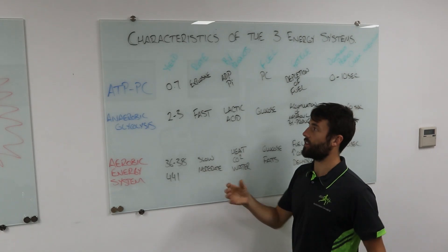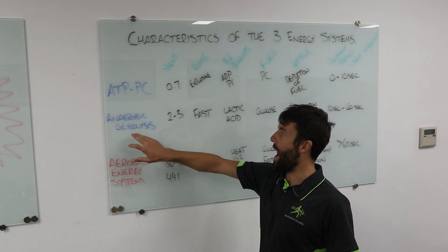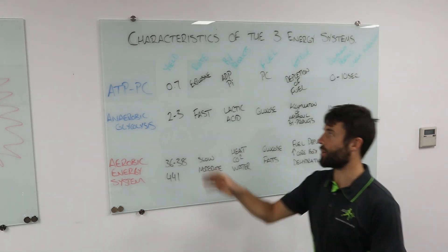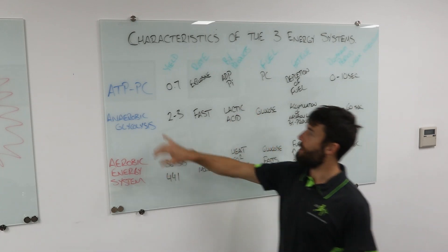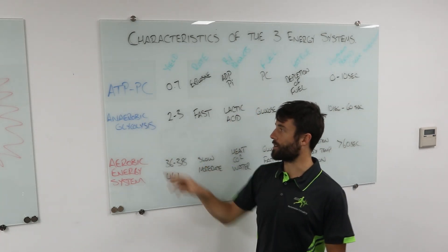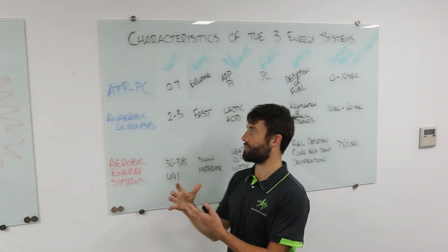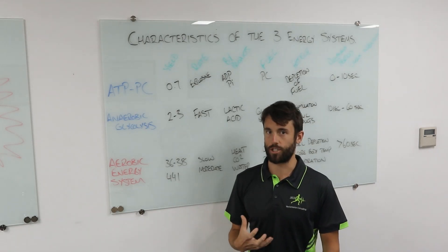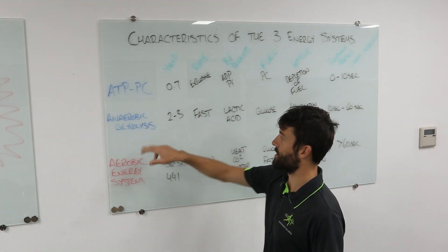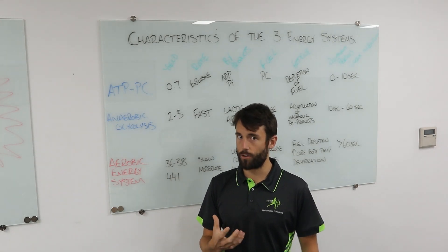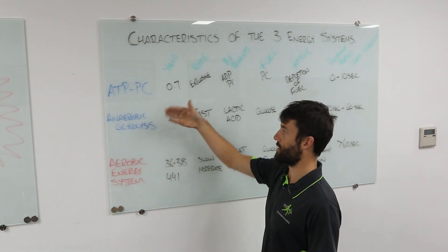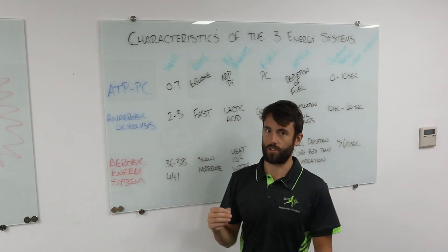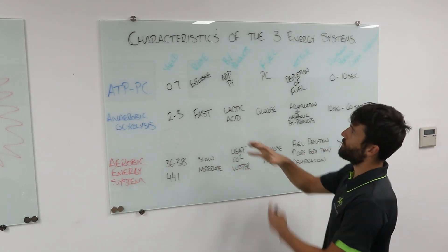So we've got our three energy systems: our ATP-PC energy system, our anaerobic glycolysis energy system, and our aerobic energy system. A few terms before we go through some of the characteristics. Anaerobic, of course, meaning without oxygen, so that process is going to occur without oxygen present. Aerobic refers to with oxygen. Glycolysis is going to refer to the breakdown of glycogen or glucose. So anaerobic glycolysis would mean the breakdown of glycogen or glucose without oxygen present.